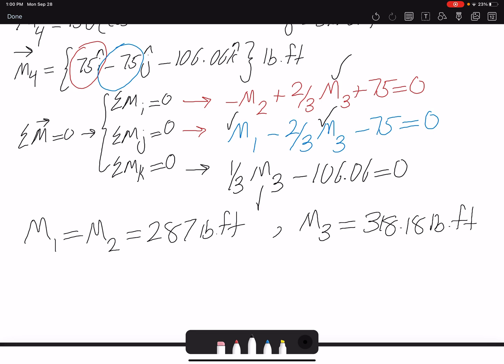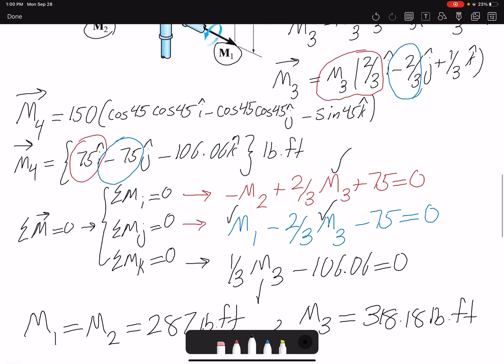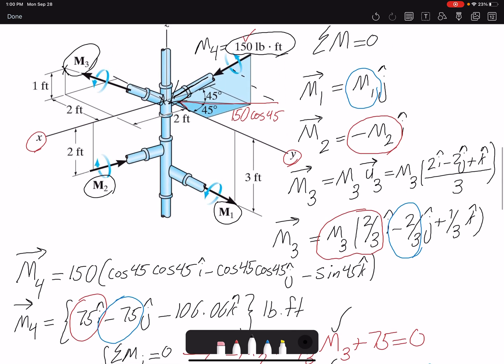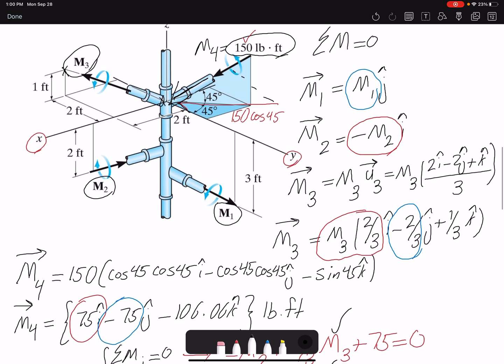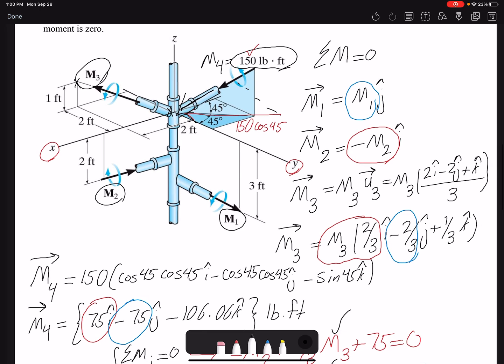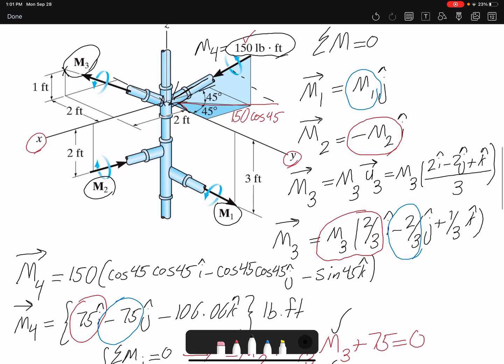So here, because we were adding the moments together, we didn't need to use any moment r. The only challenge for us was to represent these moments in vector form. Some of them were obvious, such as M1 and M2. For M4, we had to use the angles, and for M3 we had to use the dimensions.